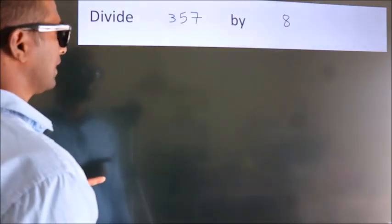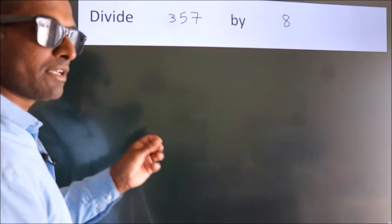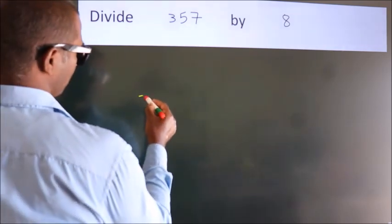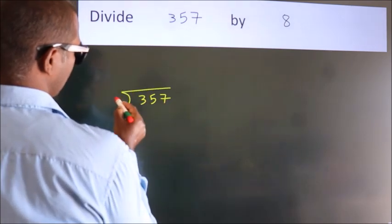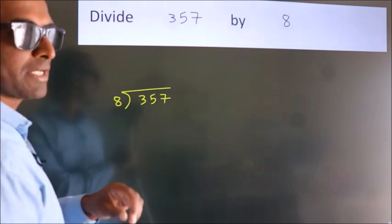Divide 357 by 8. To do this division, we should frame it in this way. 357 here, 8 here. This is your step 1.